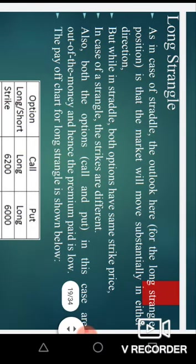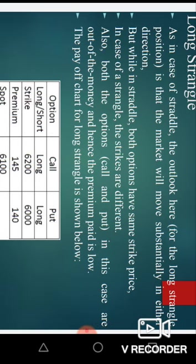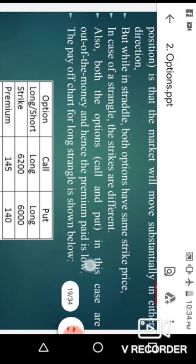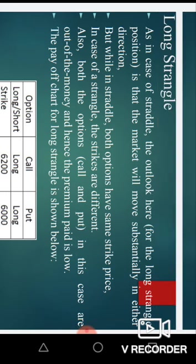The next topic is the strangle, which is different from the straddle and option spreads. In the long straddle, the outlook is that the market will move substantially. In the strangle, the movement will also be there, but while in the straddle both options have the same strike price, in the case of a strangle the strikes are different.